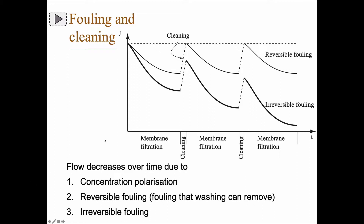If we consider a situation where we only have reversible fouling: we start the process, use the membrane filter, the flux decreases, we stop and clean it, and we get the higher flux again. After cleaning we come back up to the same permeate flux as before. With irreversible fouling, when we stop and clean we never get back up to the initial flux — we reach a lower value, and this is a problem.